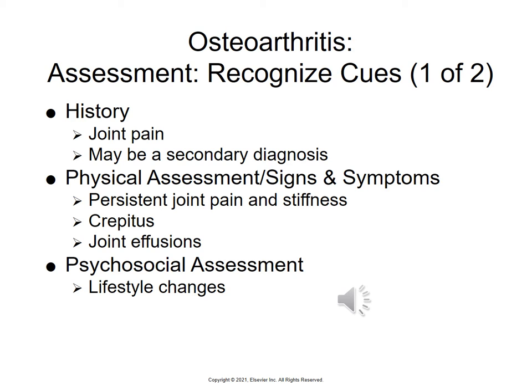When taking a history and assessment of osteoarthritis patients, you want to know about joint pain — the characteristics, when it started, what age they were at onset, and any other disease processes affecting their joints. Physical assessment signs and symptoms are persistent joint pain and stiffness, crepitus, and joint effusions. The pain will be so bad that it interferes with quality of life, including sexual activity and body image due to joint deformities, and it may also cause depression.